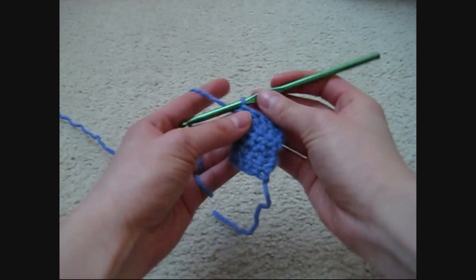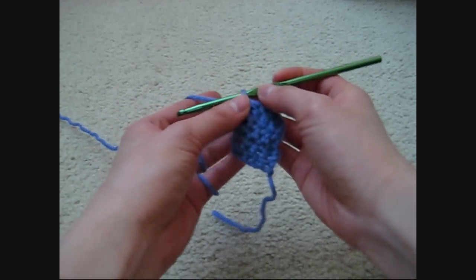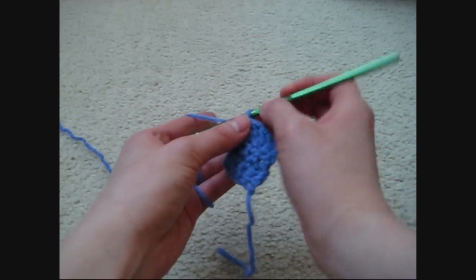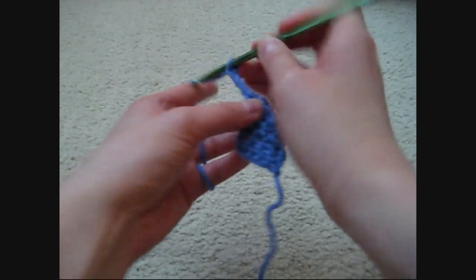The next one is called the triple crochet. After this row, I'm going to chain 4 instead of 3—1, 2, 3, 4.